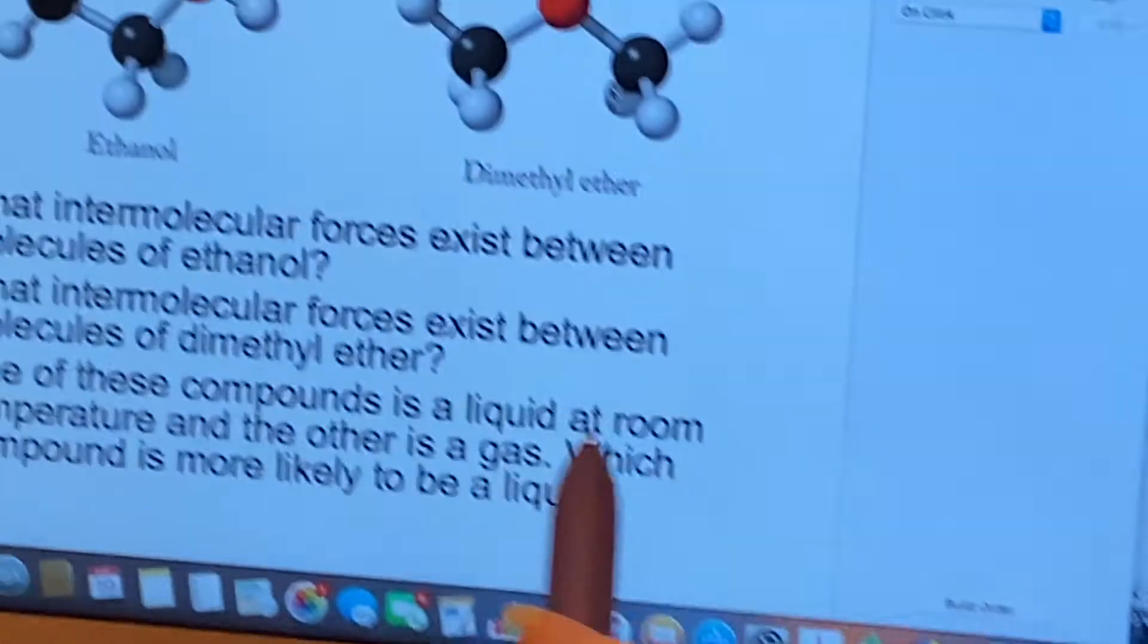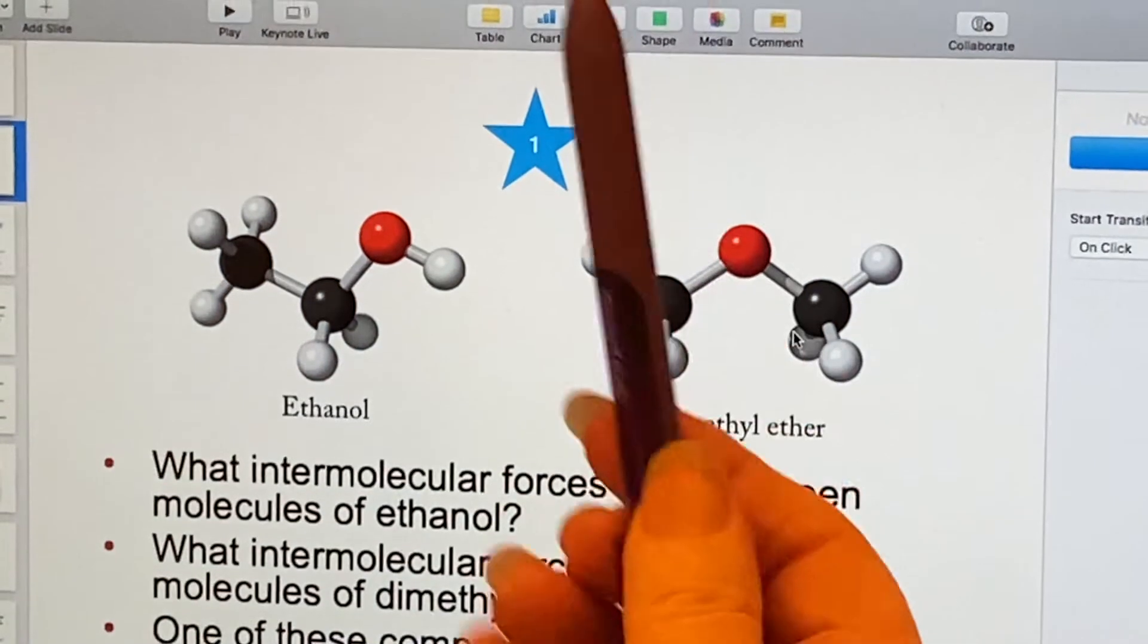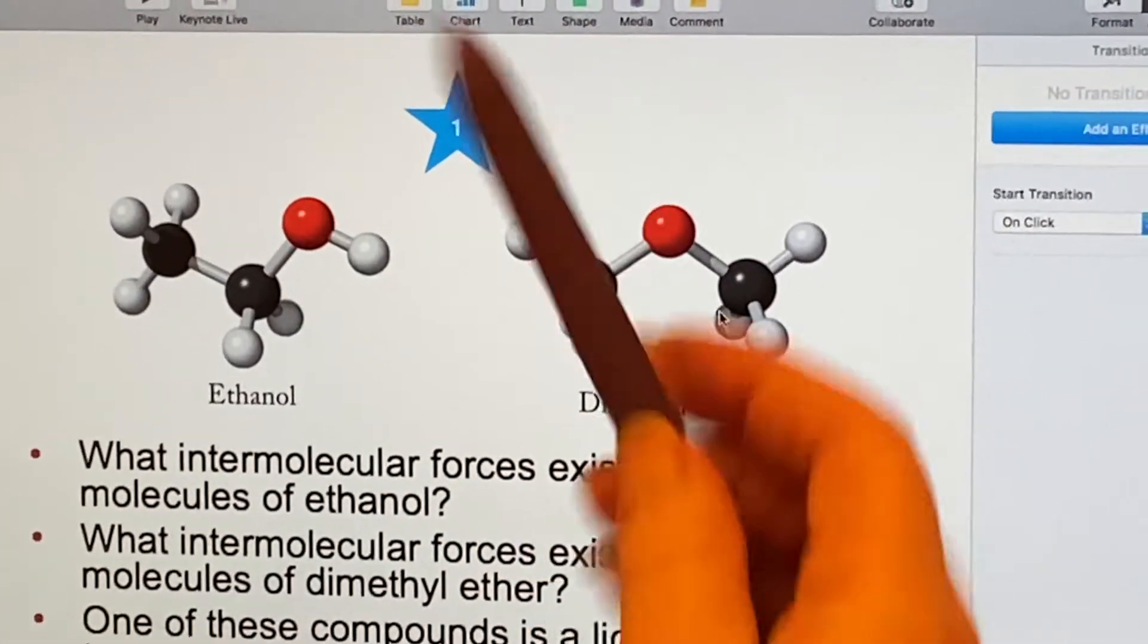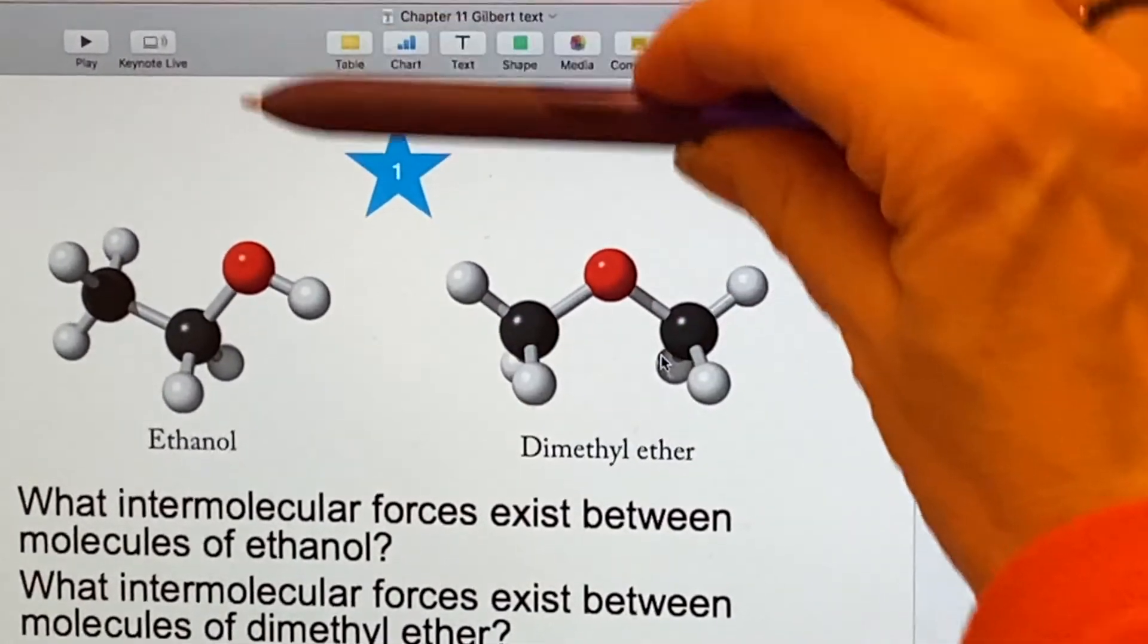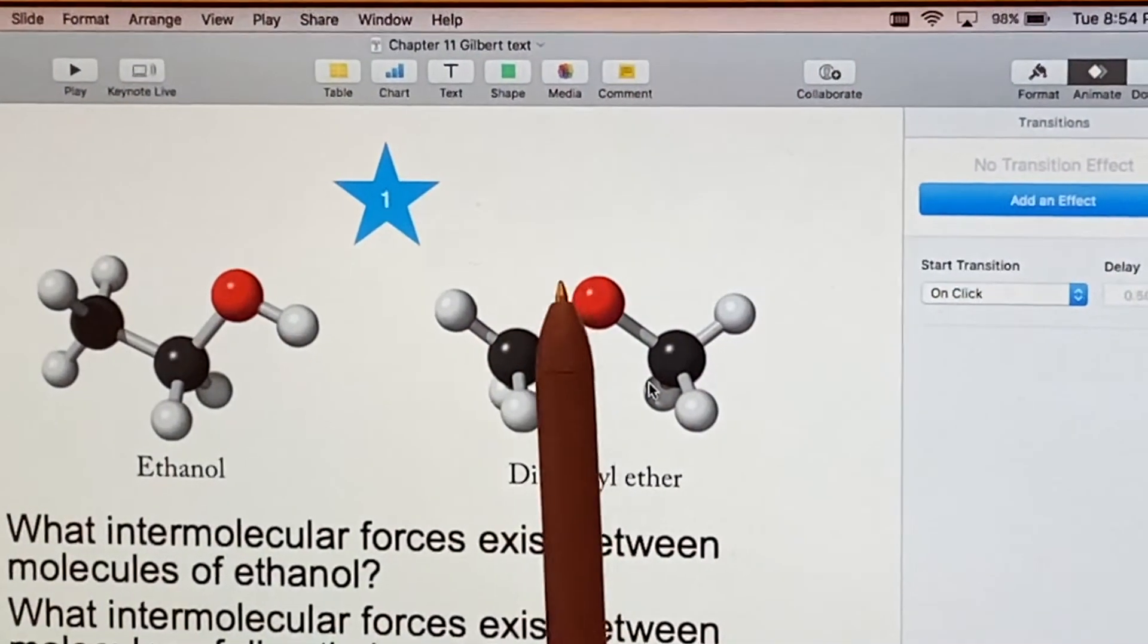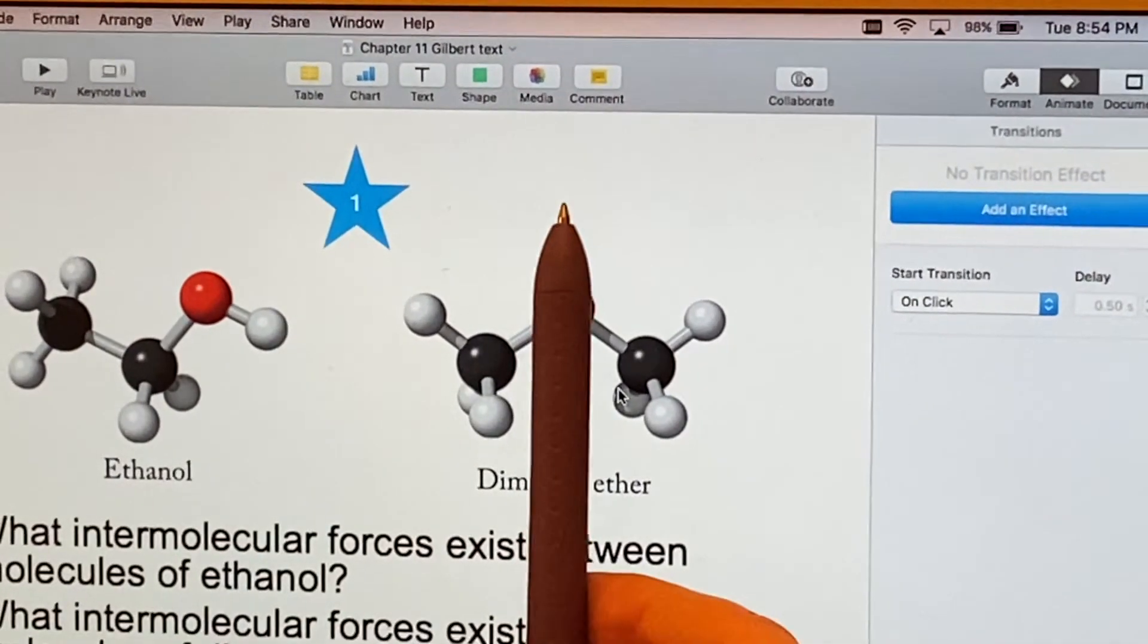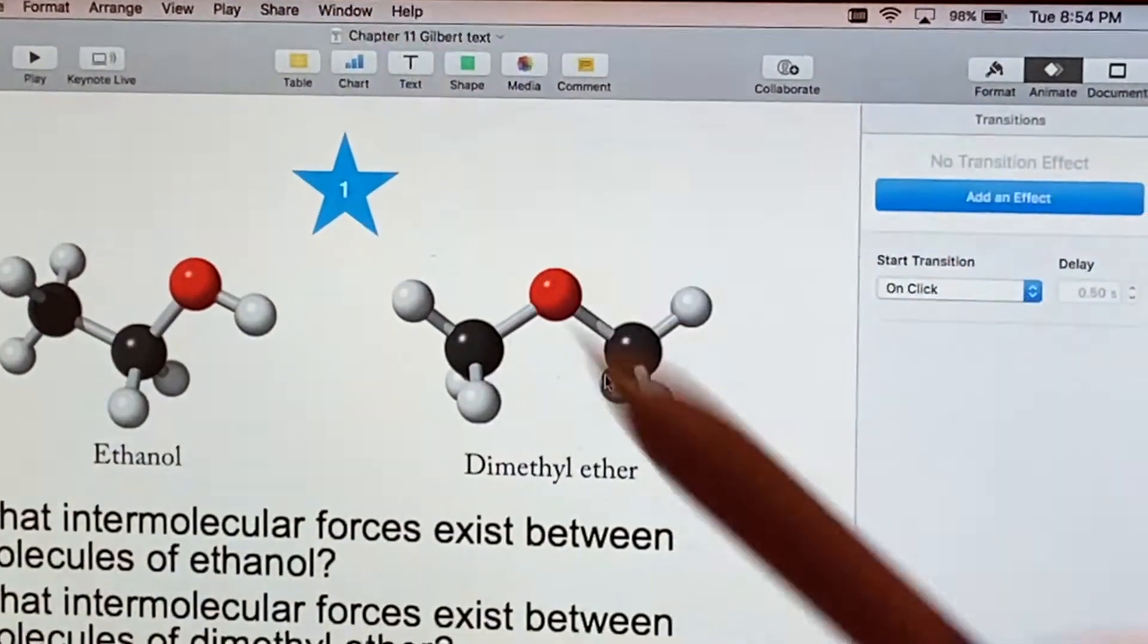At first, we might think no, because look, it looks like it's symmetric. Left to right, it is symmetric, but it's not symmetric this way. So it still does have a dipole moment, because this is more positive than what's down this way. So we still have dipole-dipole,